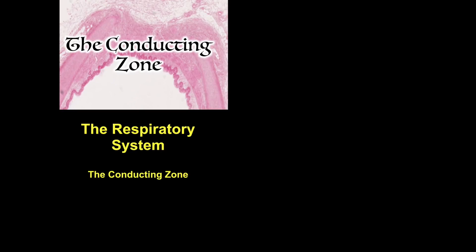Welcome to the respiratory system: the conducting zone. The respiratory system provides for exchange of oxygen and carbon dioxide to and from the blood. Respiratory organs include the lungs and a branching system of bronchial tubes that link the sites of gas exchange with the external environment. Functionally, the system has two components: the conducting portion or zone and the respiratory portion or zone. This tutorial will take us through the histology of the conducting zone.